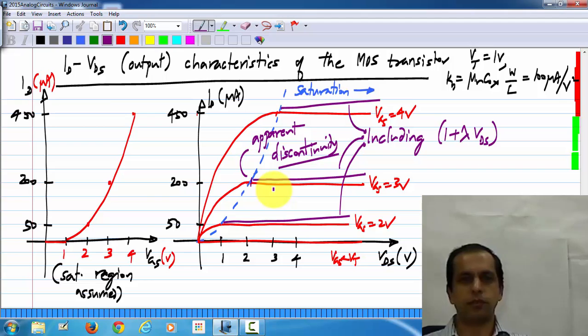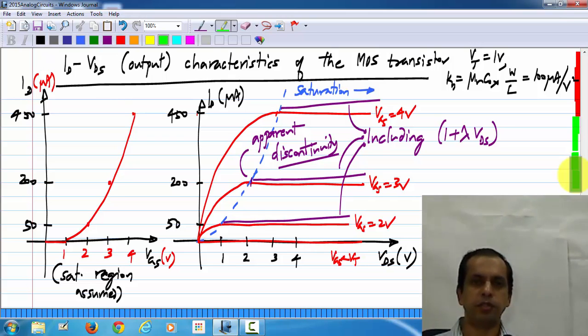But do not worry about it. The actual model of the MOS transistor is very sophisticated and complicated, and it does not have these discontinuities. It is because we are using oversimplified models that we have this problem, but that is okay. But we do need these oversimplified models for any hand calculations.